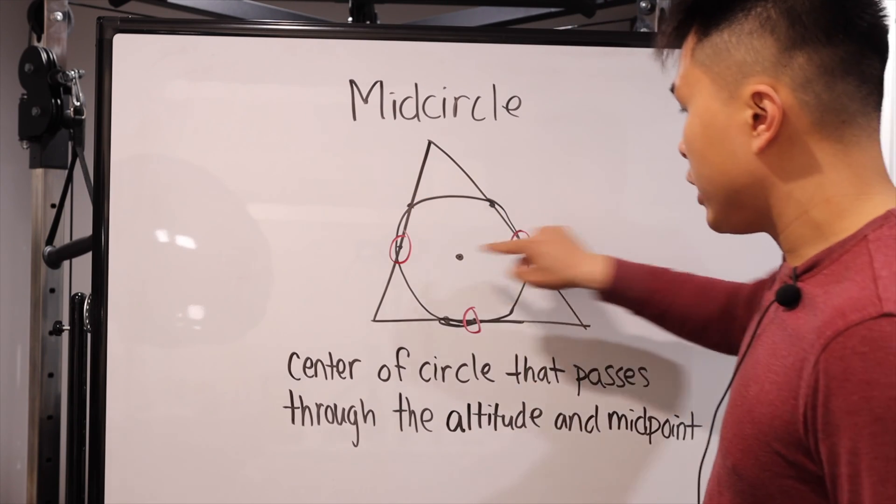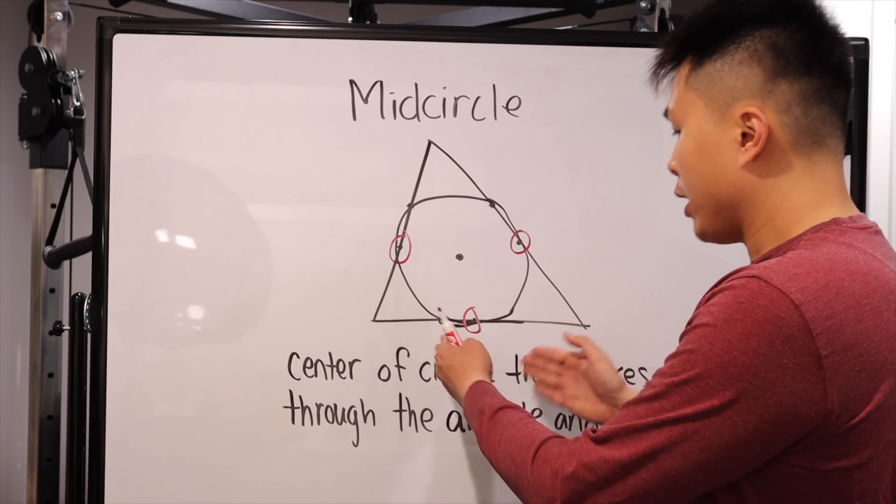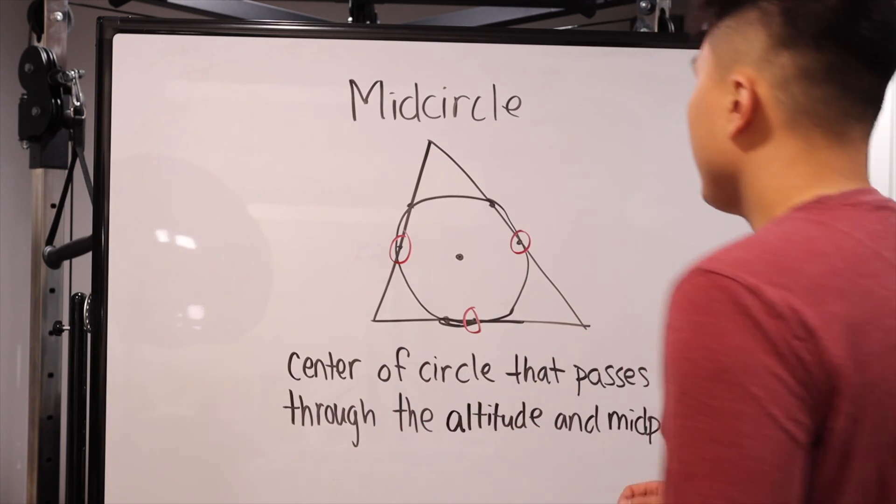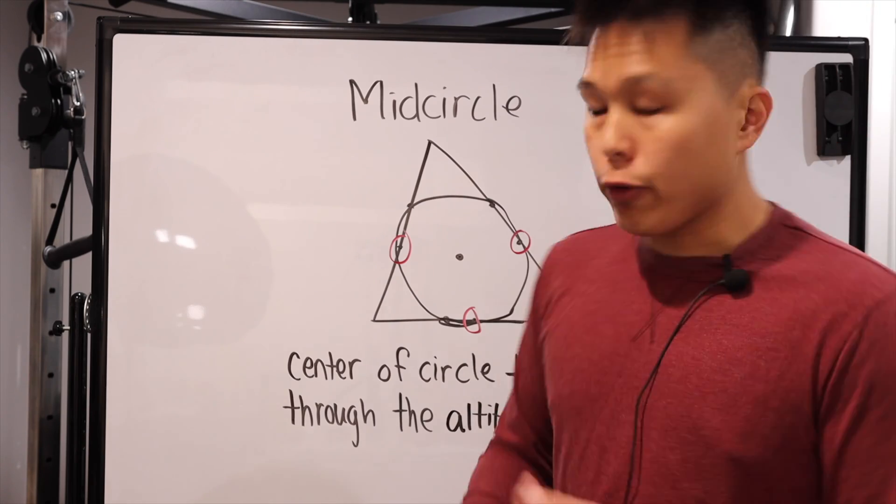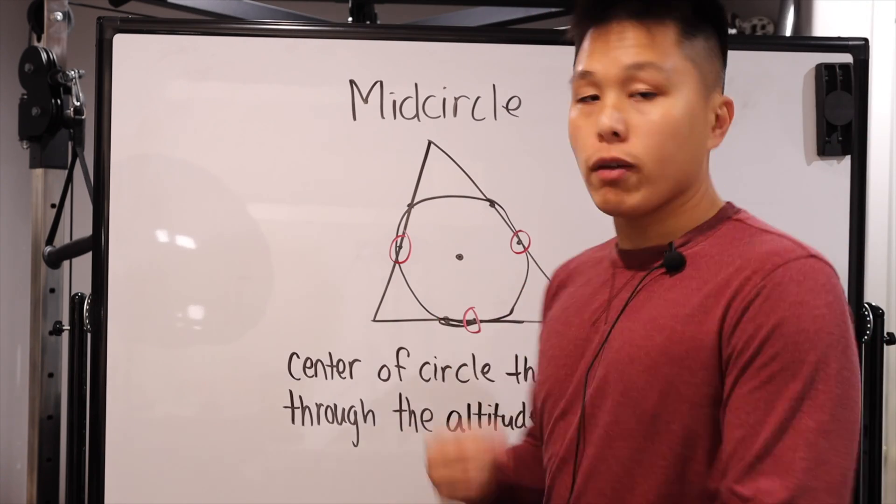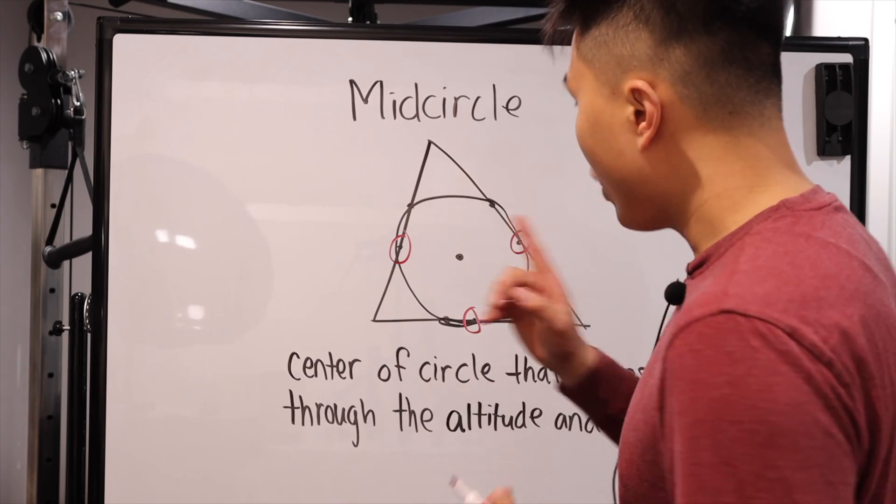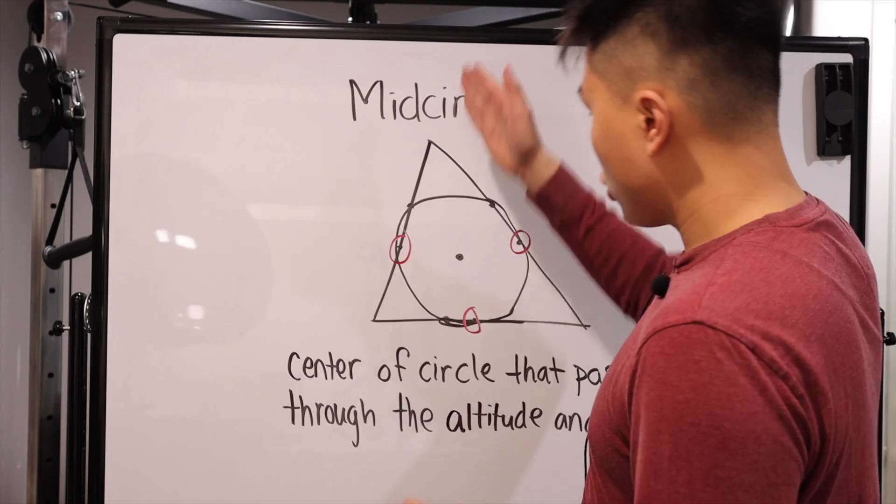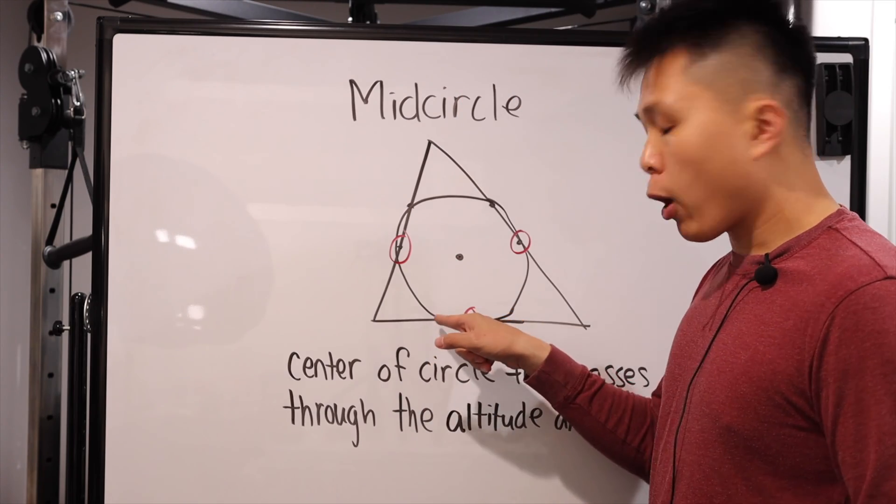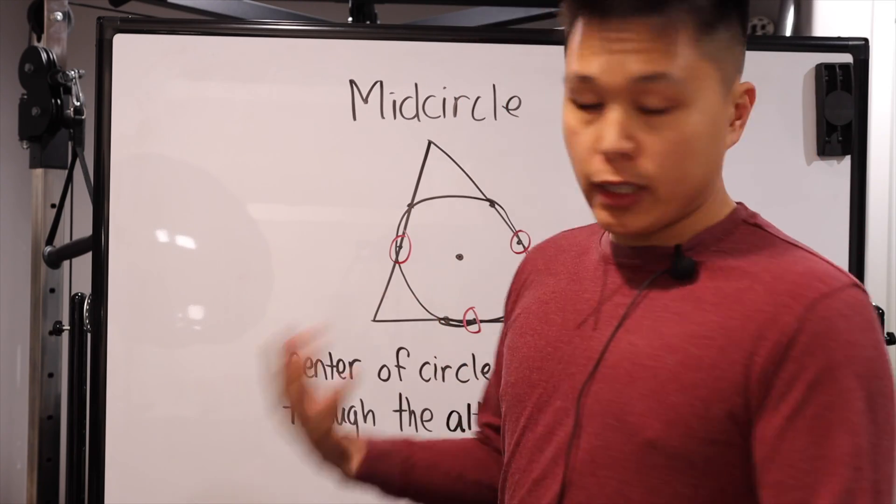The first one is the midpoint. So basically, the middle segment of that line segment. Now, the second point is known as the altitude. Now, if you remember the first center of a triangle, we mentioned altitude. What it is, is from the vertices, you're drawing a line straight across that creates a perpendicular angle, which basically a 90 degree angle.